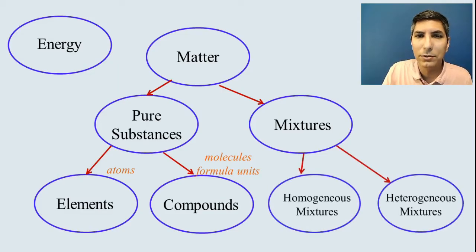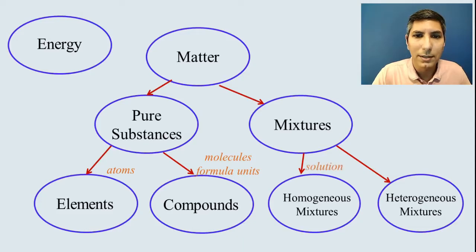For mixtures, we can classify those into two types. We have homogeneous mixtures and we have heterogeneous mixtures. Homogeneous mixtures, sometimes called solutions, are when you have multiple substances and it's uniform in its composition. That means that you cannot see different parts or different phases of that homogeneous mixture with the naked eye. It is uniform. Something like Kool-Aid or air or steel, these are mixtures and they're uniform all the way through. You can't see the little chunks of different parts in that homogeneous mixture.